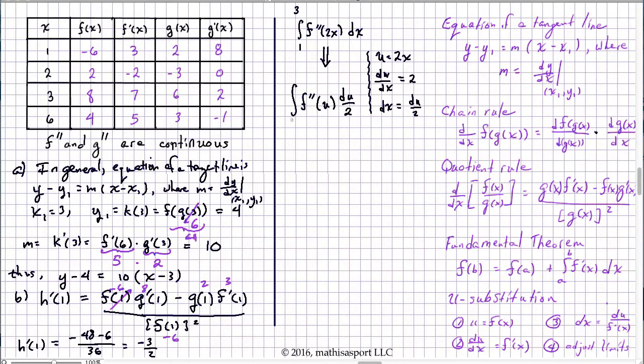Now what about the limits of integration? Well again because we're working with u and the original limits of integration that we're given were for x we have to adjust those limits. Namely when x is 1, u is 2, when x is 3, u is 6 and so formally we have to write it like this. Okay well there's progress there, I'm just going to rewrite this as I'm going to bring the one half out front.